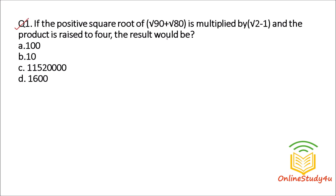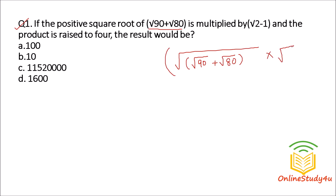Let us start with question number 1, which is from simplification. The questions in the examination are of medium level. So if the positive square root of square root of 90 plus square root of 80, and you multiply by square root of 2 minus 1, and if the product is raised to the power 4, then what will be the result?